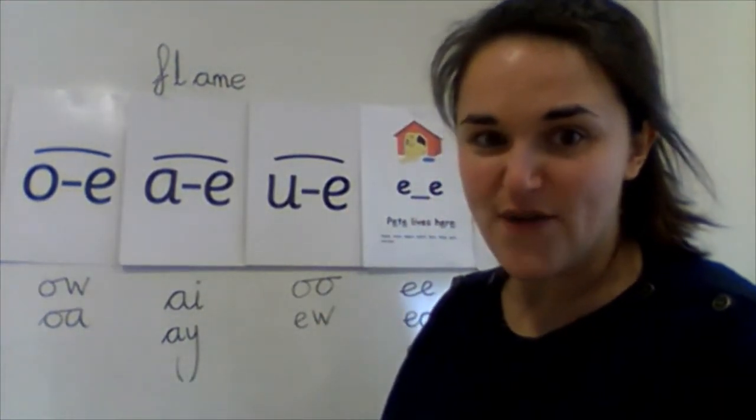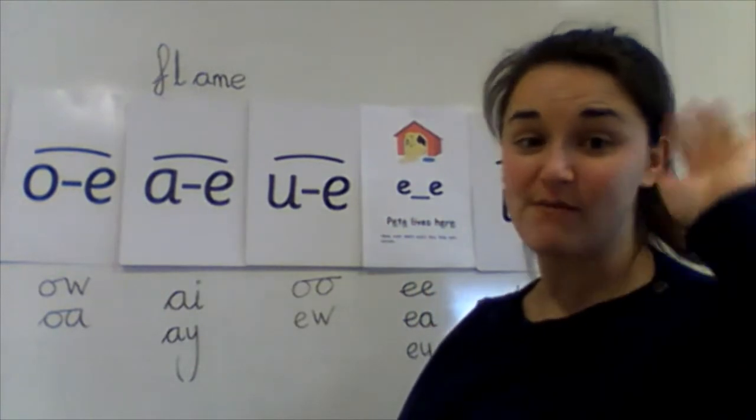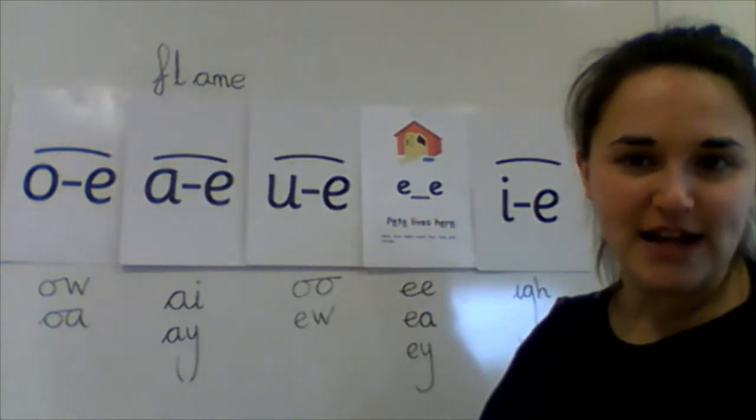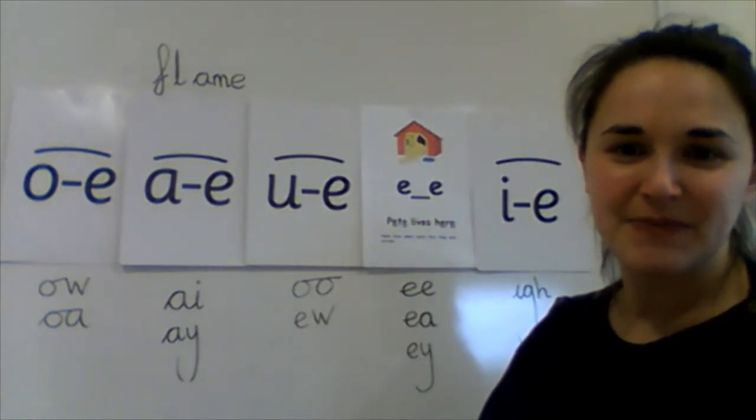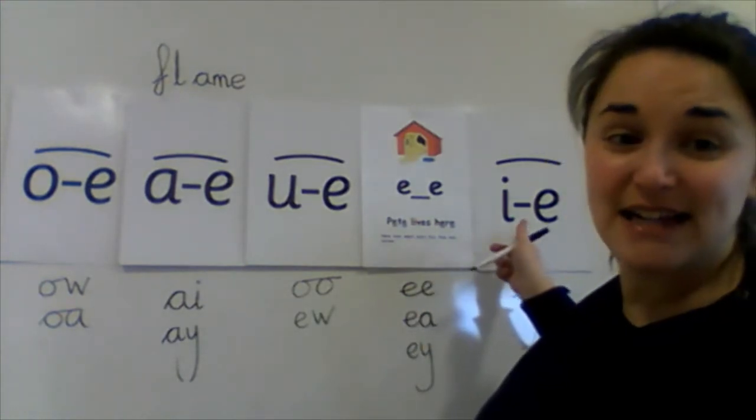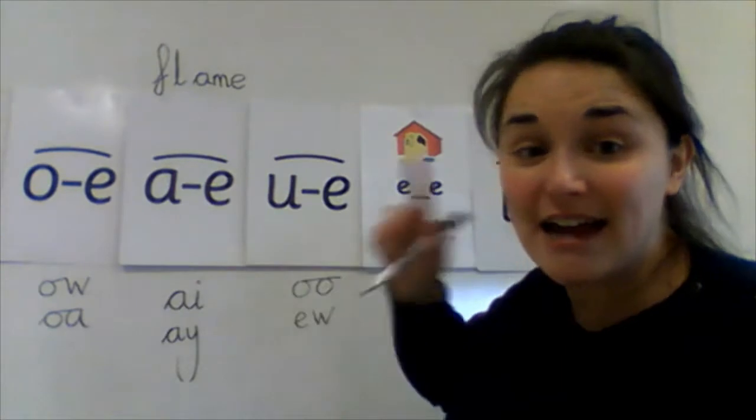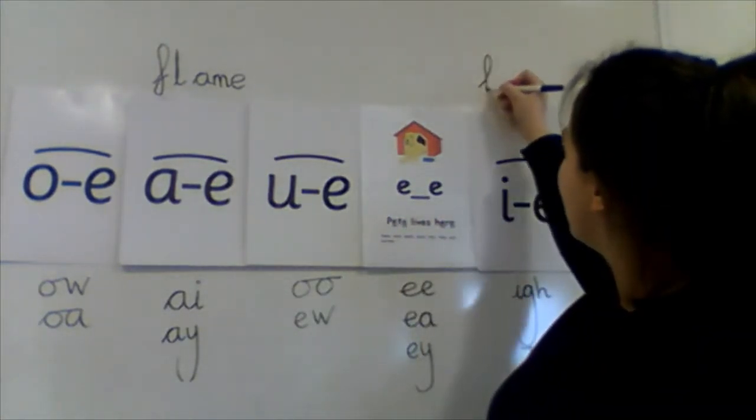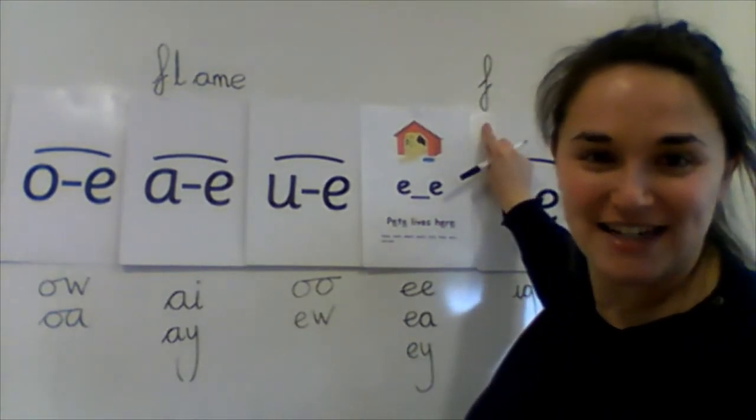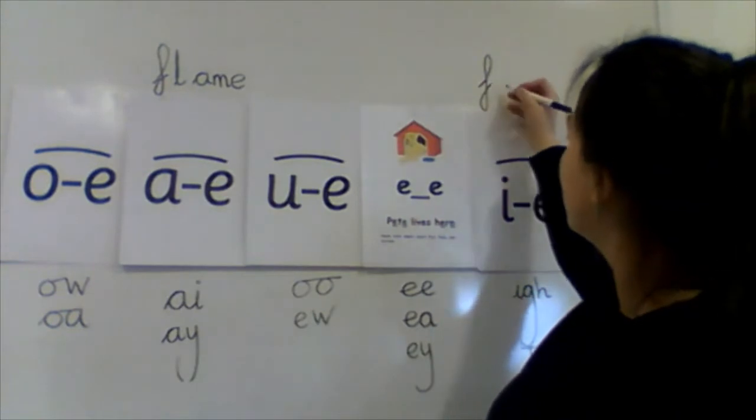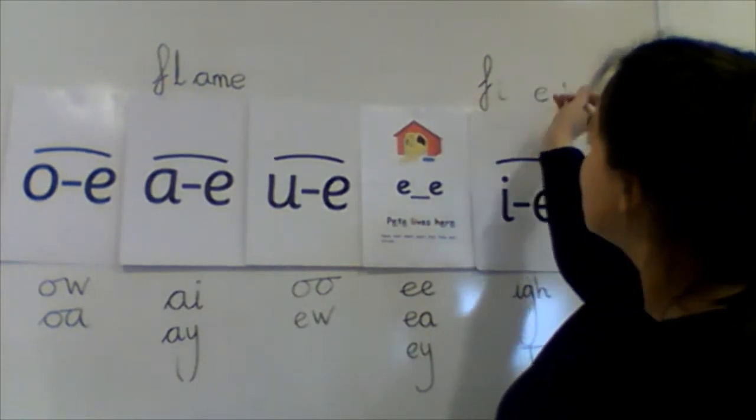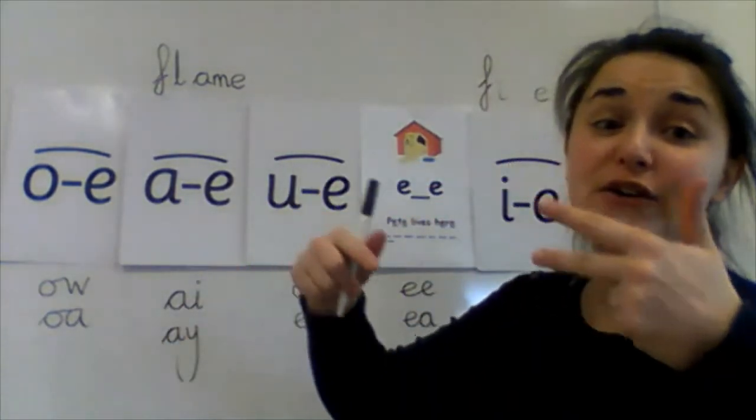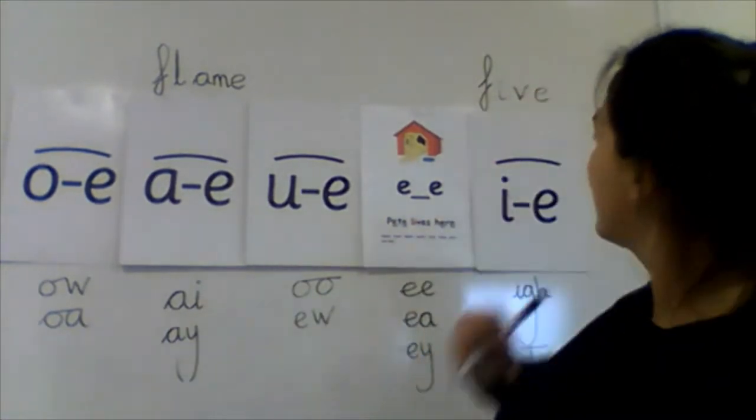Could you have a go at writing the word five? I am five years old. I wonder which split digraph it will have in it. It's got our I-E nice smile in it. I can hear it. I've done another one of my F letters, ready for when I join my letters up. I-E, there's my split digraph, come back to the sound in the middle. Five.